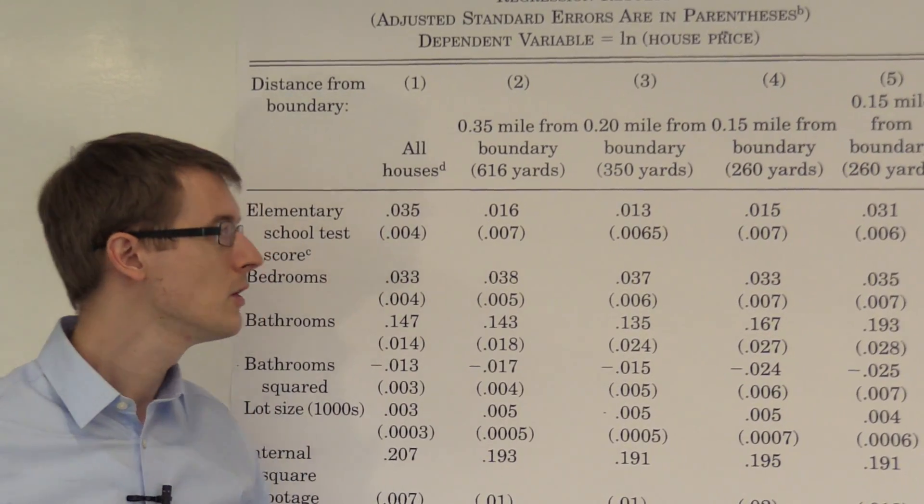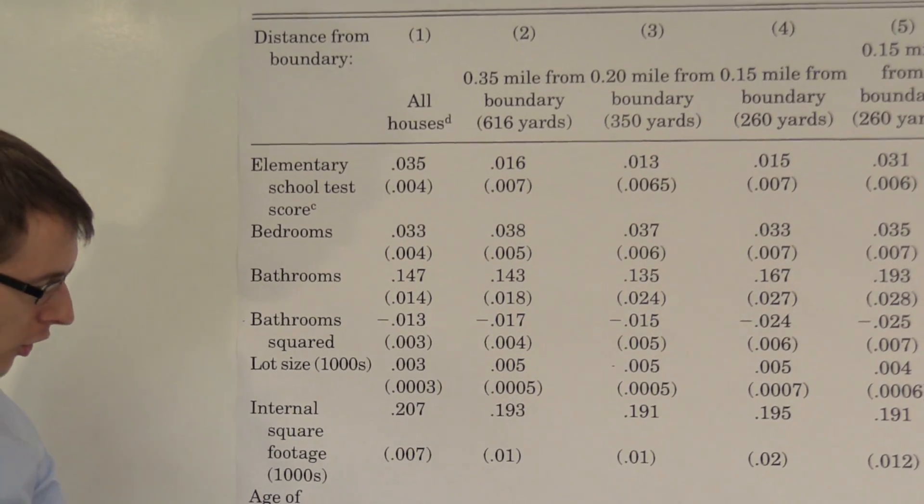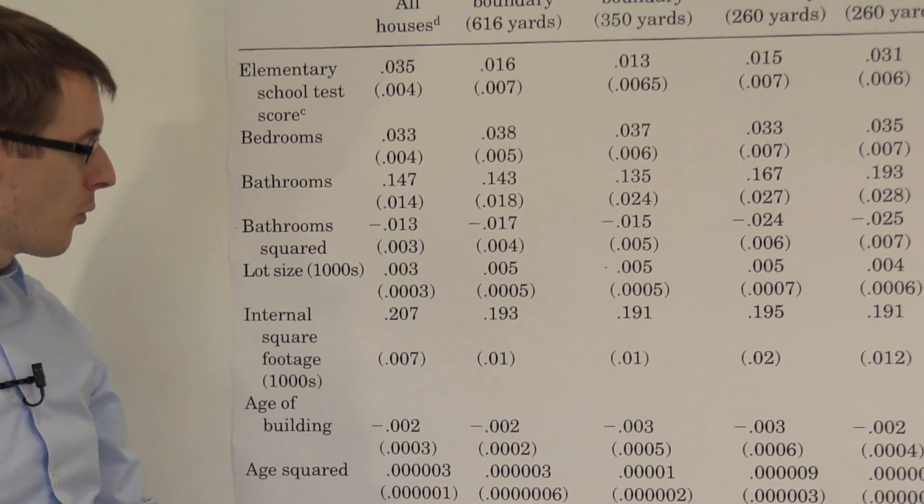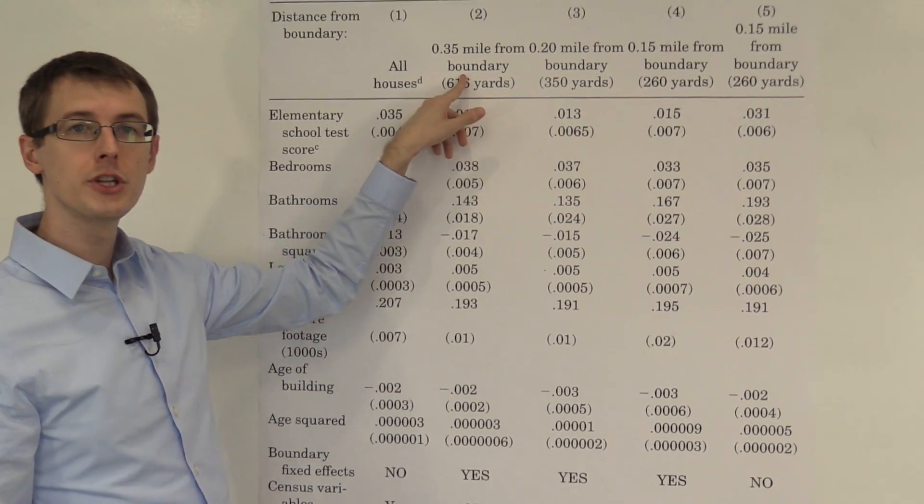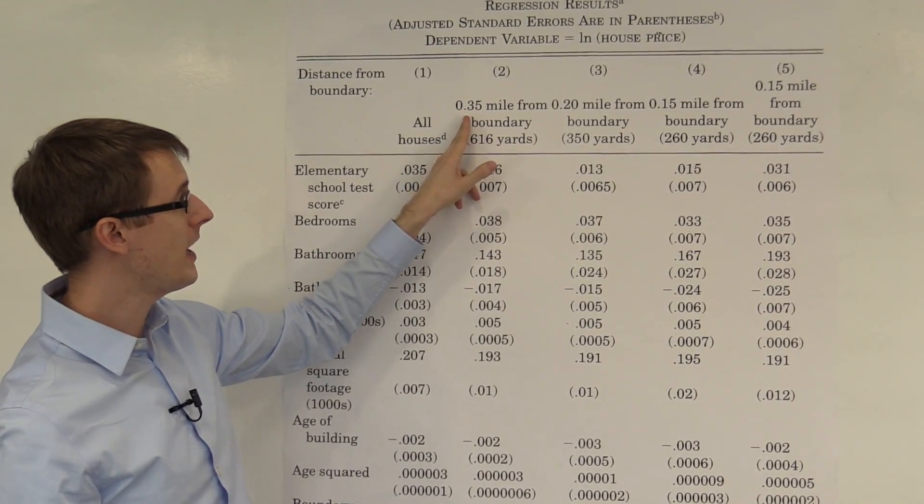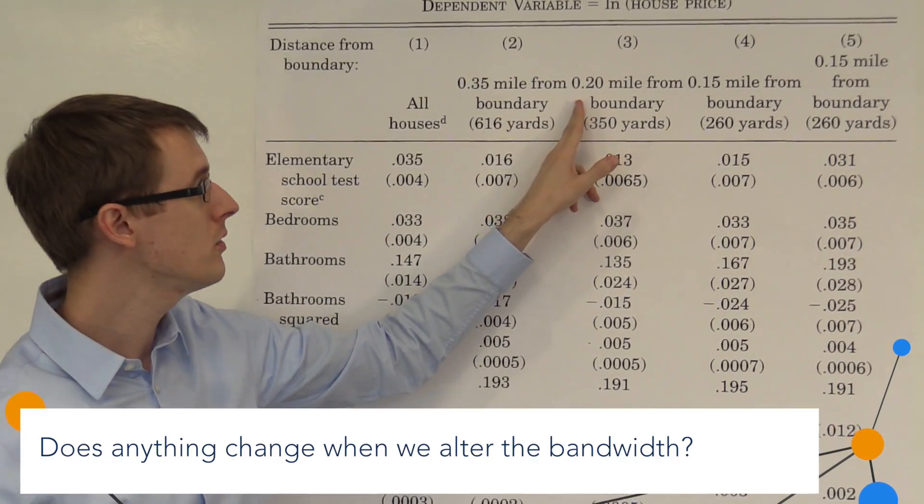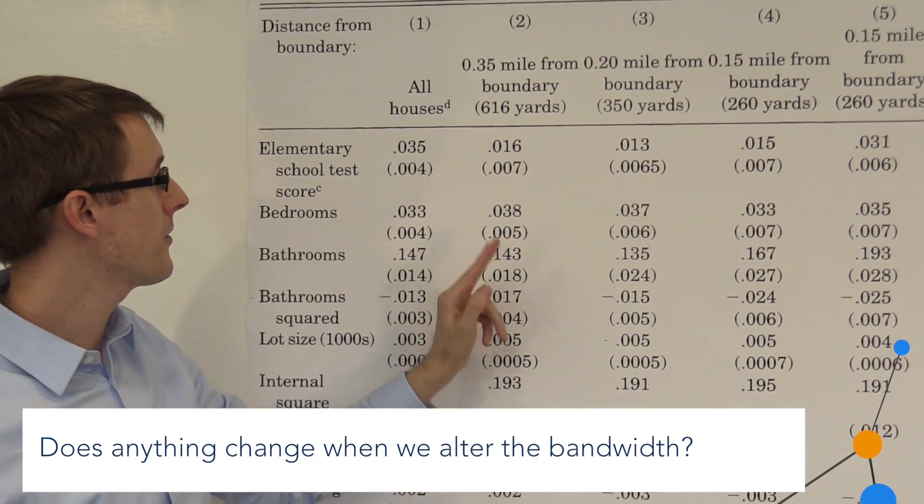So what are we going to do? Well, we're going to use the regression discontinuity idea. And instead of looking at all 22,000 or so houses, we're going to look at just houses that are close to the school boundaries. Okay? So we're going to either look at 0.35 miles from the boundary, 0.2, or 0.15 miles.